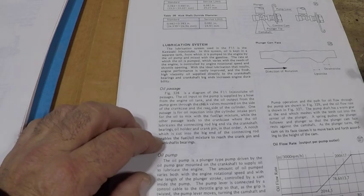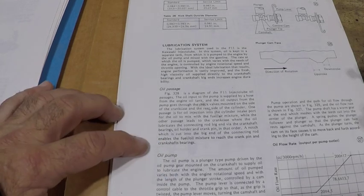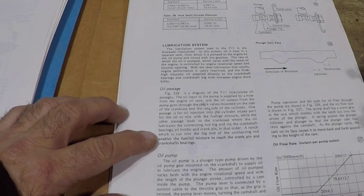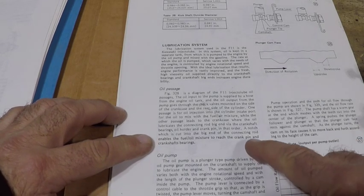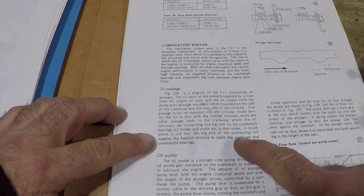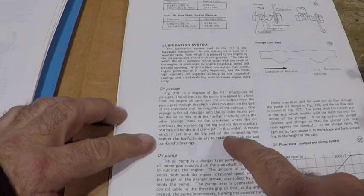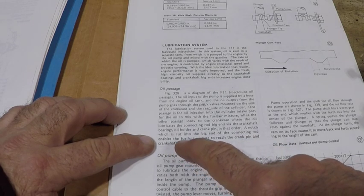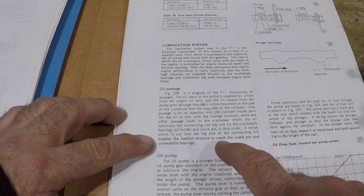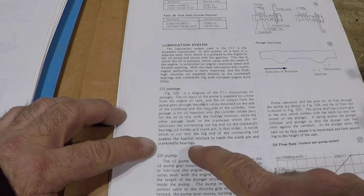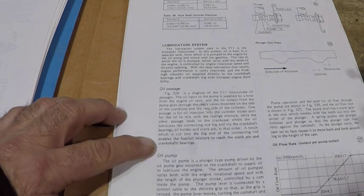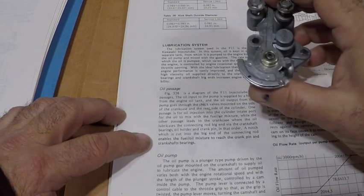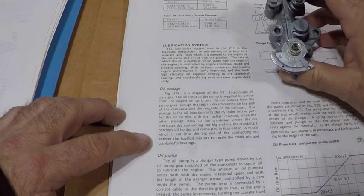But also what it says down here, it says right here: 'A notch which is cut into the big end of the connecting rod enables the fuel oil mixture to reach the crank pin and crankshaft bearings.' So the point I'm trying to make here is we need the pump. There's no doubt about it.